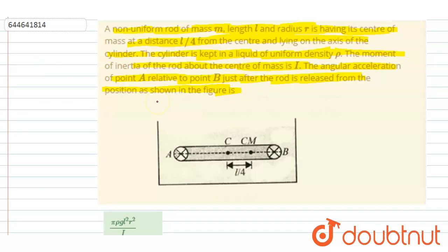If I talk about the angular acceleration of point A with respect to B, it will be seen as the angular acceleration of the rod about the center of mass. Let's say the angular acceleration of the rod about the center of mass is alpha. Then A will have an acceleration of alpha times 3L by 4.